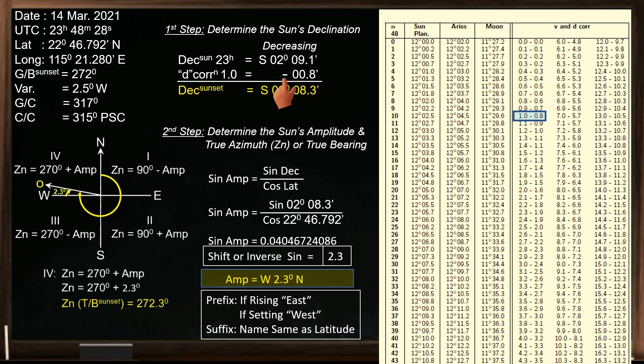We subtract the correction since the value of declination is decreasing. If it is increasing, we will add the D correction. The declination at sunset is 2 degrees, 8.3 minutes south.